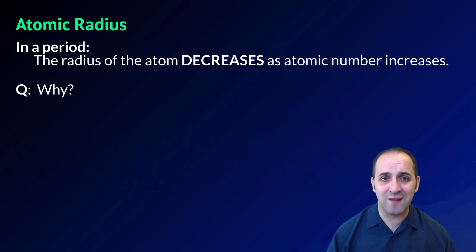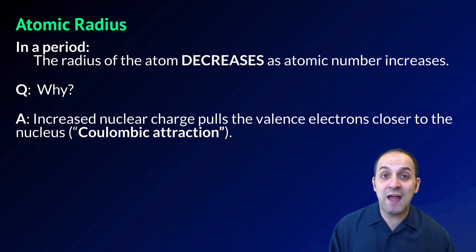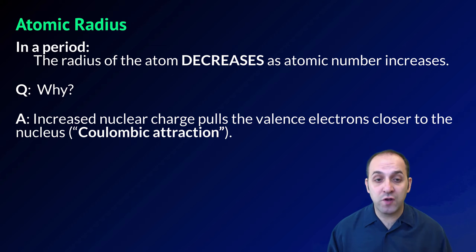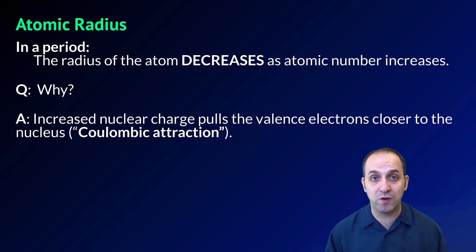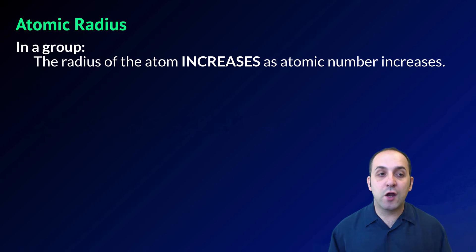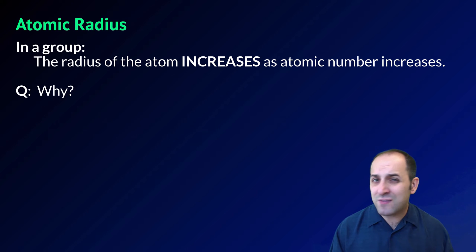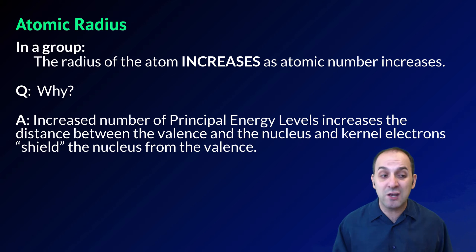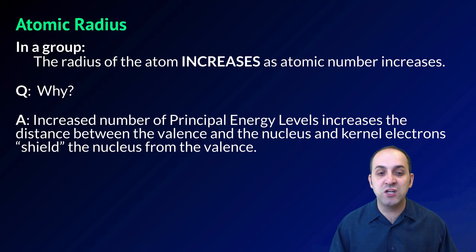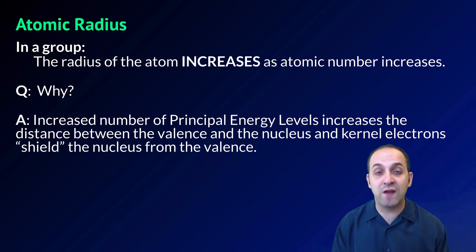Here's the answer. The increased nuclear charge of the atom, as we add additional protons, pulls the valence electrons closer to the nucleus. This is called Coulombic attraction, and it's going to be responsible for a lot of the trends we see in this lesson. Similarly, in a group, the radius generally increases as atomic number increases because the increased number of principal energy levels increases the distance between the valence electrons and the nucleus. In addition, all of those inner kernel electrons shield the nucleus from the valence electrons, absorbing some of the force that would otherwise be felt by those valence electrons.